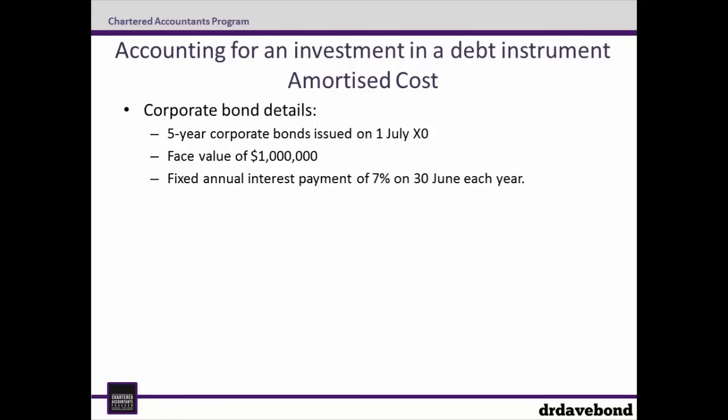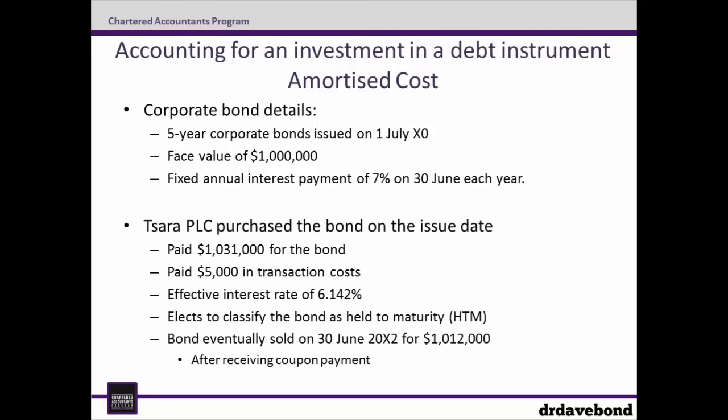The investors don't get this set of cash flows for free — they pay for it up front. SARA PLC purchased the bond on the issue date and paid $1,031,000 for it, as well as $5,000 in transaction costs. We're told the effective rate is 6.142% and that SARA elects to classify the bond as held to maturity. SARA then sells the bond on the 30th of June X2 for $1,012,000, and this happens after receiving the coupon payment.